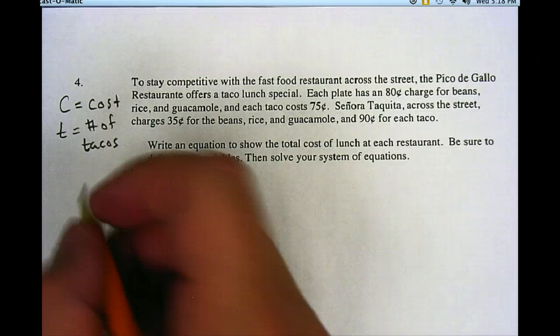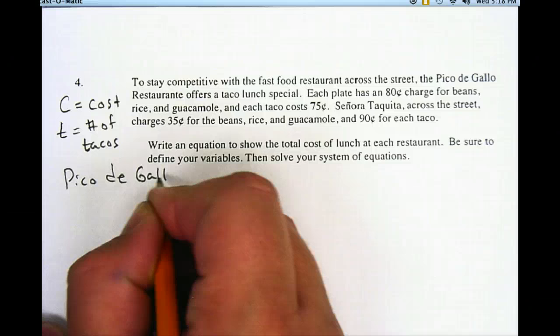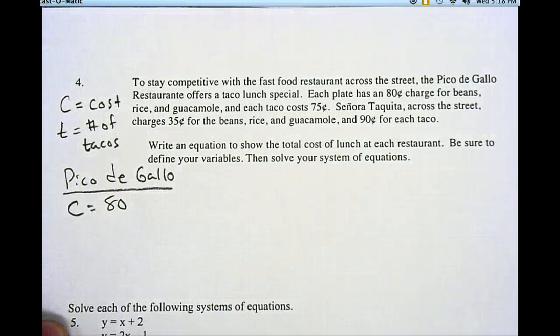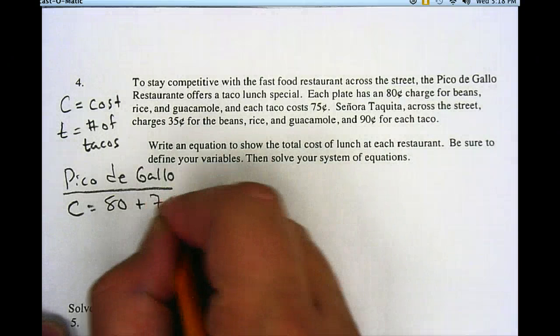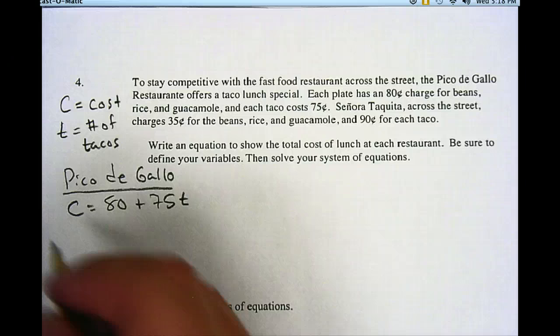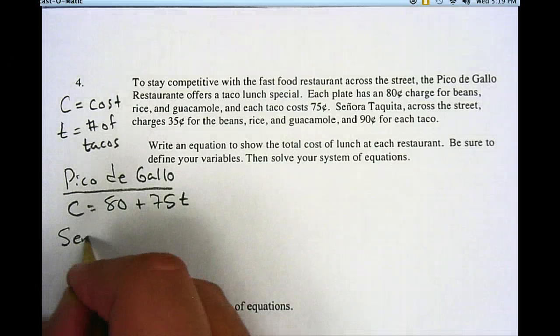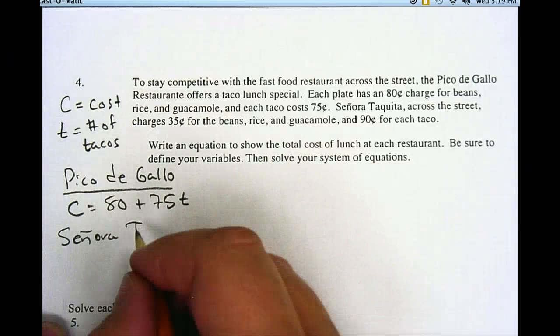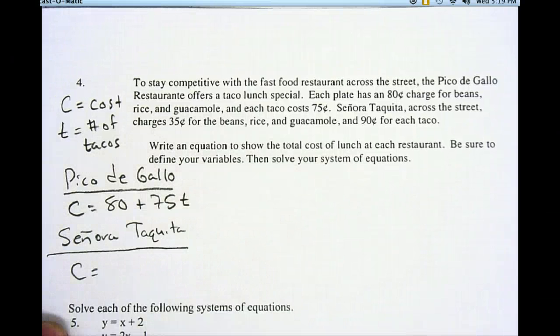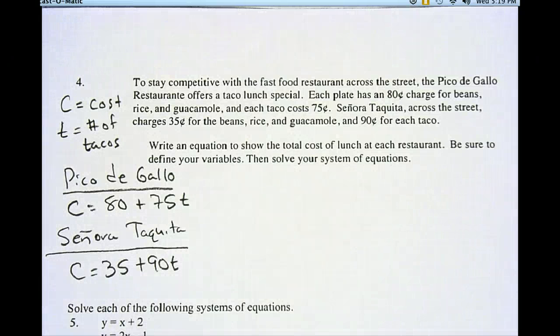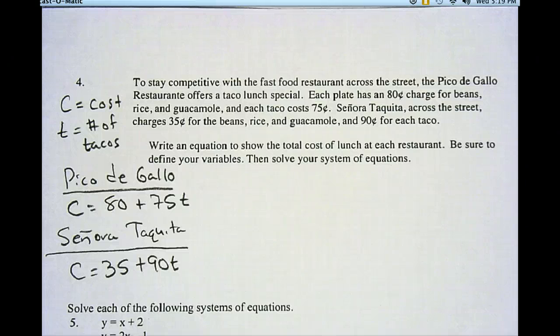So at Pico de Gallo, my cost is $0.80 that I have to pay one time for all the beans, the rice, and the guacamole, plus then I also pay $0.75 for each taco. So that's that cost for that one. At my other restaurant, which was Señora Tequita's, I don't know Spanish very well, but I'm doing my best. The cost there is $0.35 for the rice, guacamole, and beans, and then it's $0.90 for each taco. So those are my two equations right there. They're both costs. C is equal to 80 plus 75t, and C is equal to 35 plus 90t. They're both equal to C.